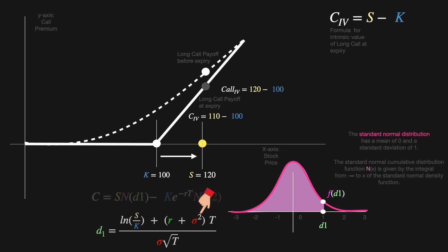Sigma times the square root of T is acknowledging that there's uncertainty in our crystal ball forecast. The longer we have to wait for the option to expire, and the wilder the stock's price swings, the fuzzier our forecast gets. The entire formula is like saying: given how the stock's price compares to my agreed price right now, and taking into account my crystal ball forecast and how fuzzy that forecast is, how likely is it that I'll make money from this option?